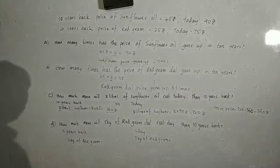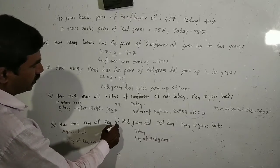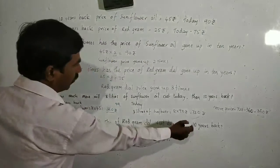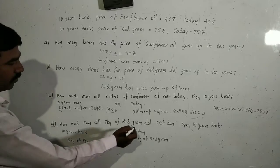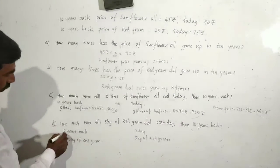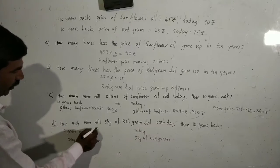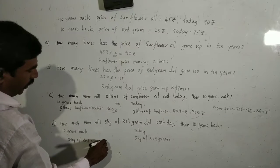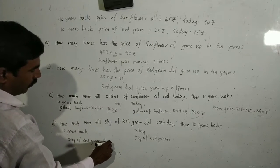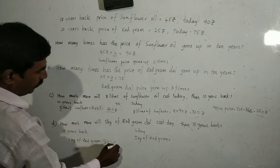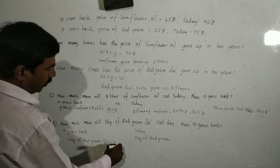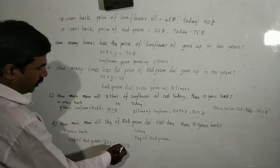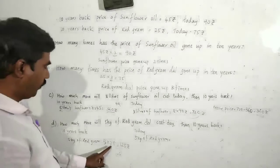Next, D: how much more will 5 kgs of red gram dal cost today than 10 years back? For this also, find 10 years back price and today's price. For 10 years back: 5 kgs means 5 into Rs. 25. 5 times 5 is 25, 5 times 2 is 10 plus 2, giving Rs. 125.